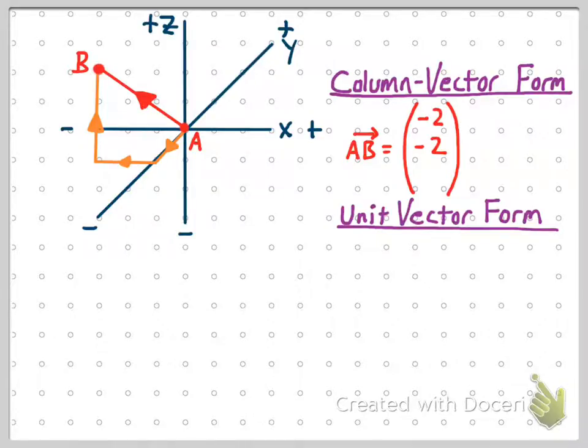And then we want to see how far up or down we go. And that would be up one, two, three. So there's a column vector form with the X component, Y component, and Z component.